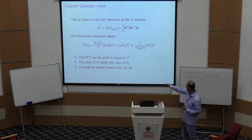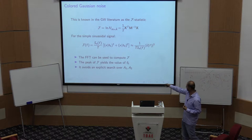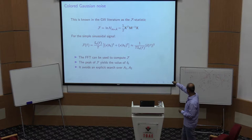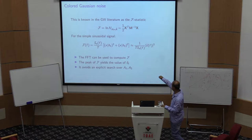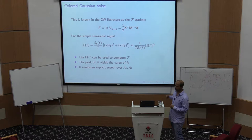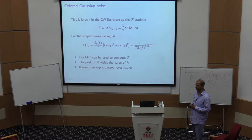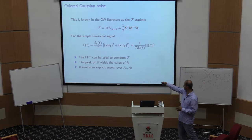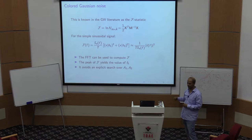Written more explicitly, the f-statistic is x·h1 squared plus x·h2 squared. This is just the modulus squared of h1 plus i times h2, multiplied by x — which is simply the Fourier transform of x. So to compute the f-statistic, you take the data, compute its Fourier transform, look at the modulus squared, and find where that is maximum.